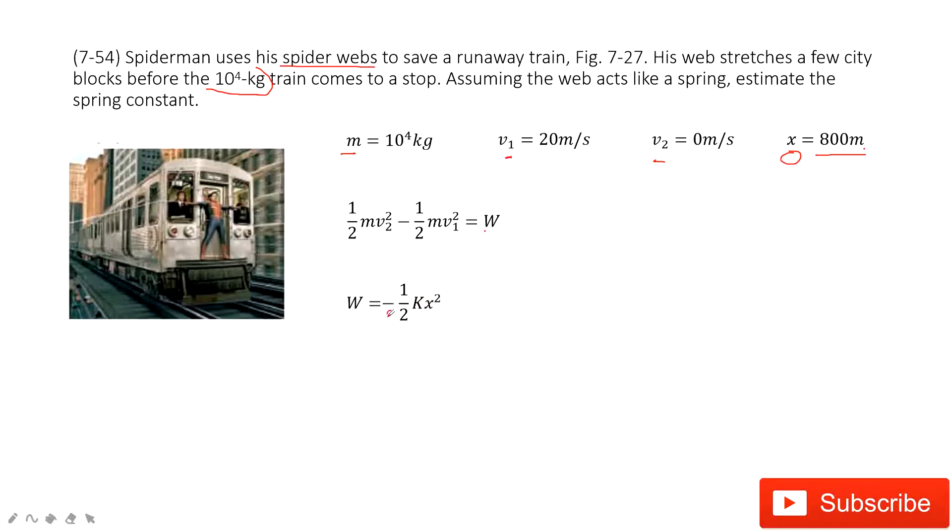Where does this negative sign come from? Because the spiderweb force is this way, and the displacement is this way. The train keeps moving, so the spiderweb keeps moving forward. The displacement d is forward.